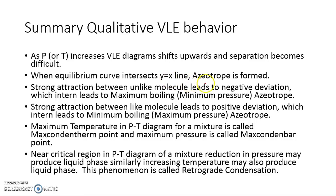In general: as pressure or temperature increases, the diagram shape changes and separation becomes difficult. When the equilibrium curve touches or intersects Y equals X, we get an azeotrope. Strong attraction between unlike molecules leads to negative deviation, which leads to a maximum boiling or minimum pressure azeotrope. The maximum temperature in a PT diagram for a mixture is called the cricondentherm point and the maximum pressure is the cricondenbar point. Near the critical region, we may experience retrograde condensation, where upon decreasing the pressure, liquid forms. Thank you.